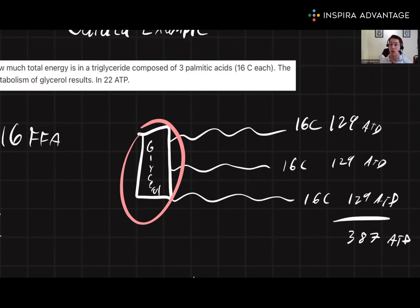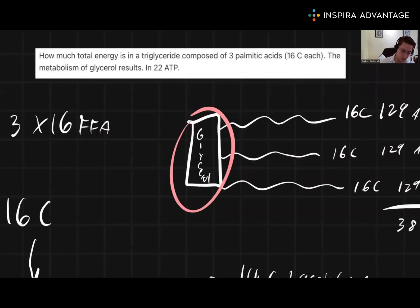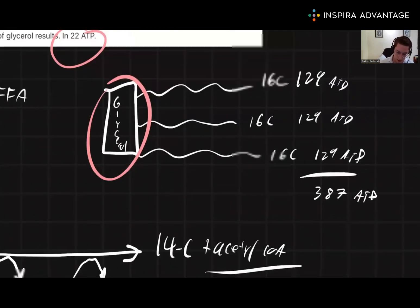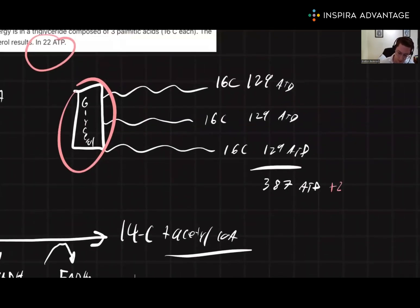Well, luckily for us, the question told us what the glycerol is worth. Glycerol is worth just 22 ATP. So we'll add that in from the glycerol part. This will bring us up to a total of 409 ATP.